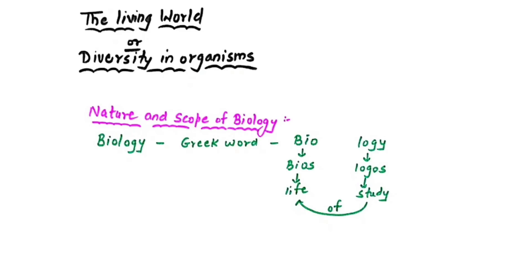The living world, or diversity in organisms, is essentially the same topic. When we study biology, we need to understand its scope. Biology is studied using two languages: Greek and Latin. The term biology is not originally English — it comes from the Greek words 'bio' (bios, meaning life) and 'logi' (logos, meaning study). So biology can be defined as the study of life.